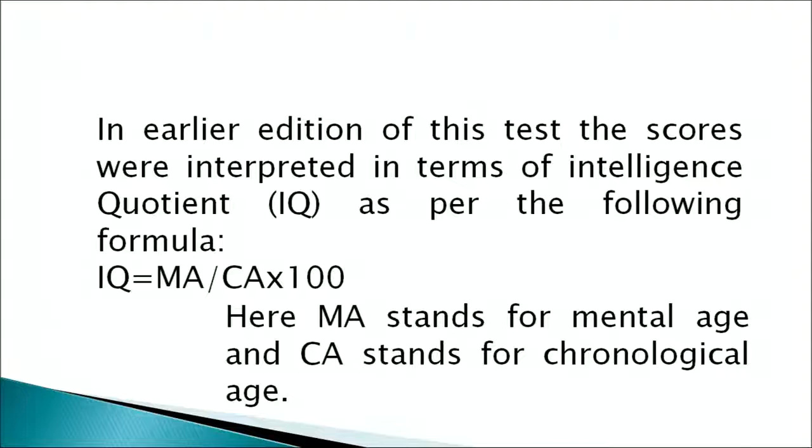This is where testing with that particular test is discontinued for the individual. In the earlier editions of this test, the scores were interpreted in terms of intelligence quotient. The formula for measuring the intelligence quotient is: IQ equals MA upon CA into 100, where MA stands for the mental age of the individual and CA stands for the chronological age of the individual.